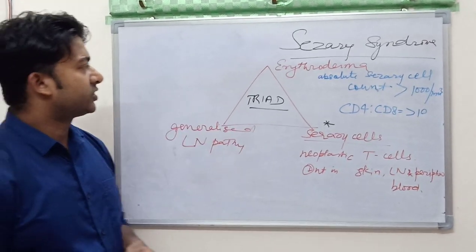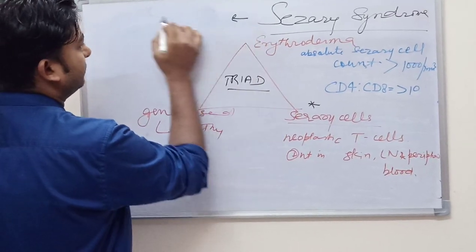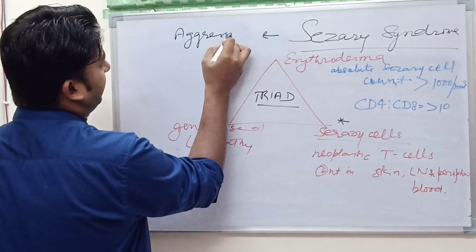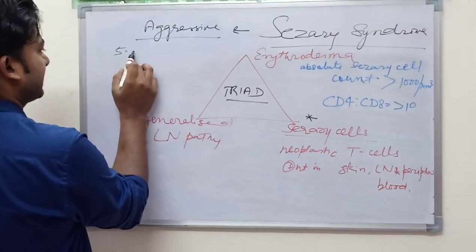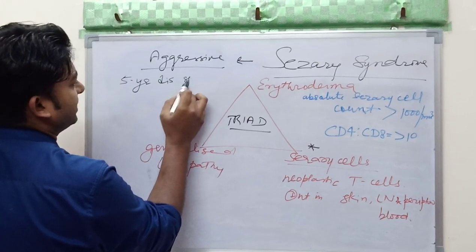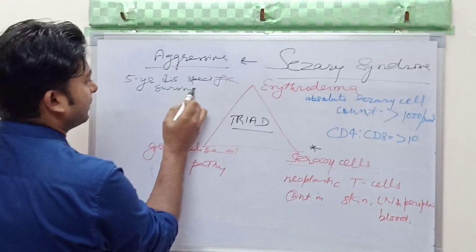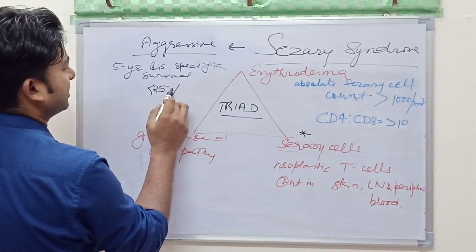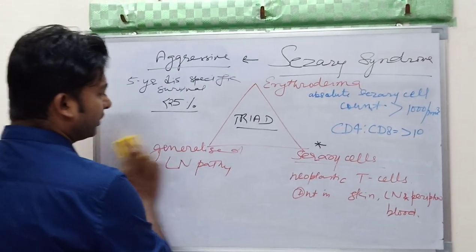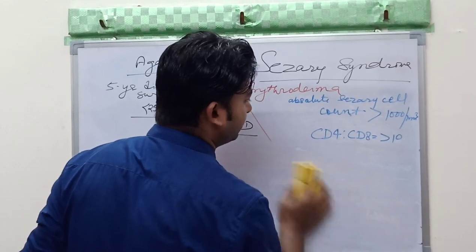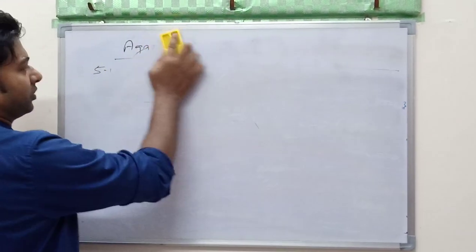That was about Sezary syndrome, and one important thing is it is very aggressive. Five year disease specific survival is less than 25 percent.